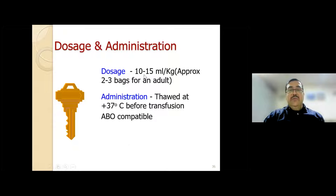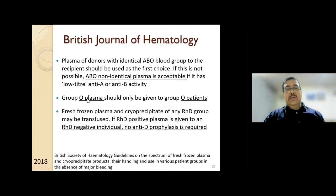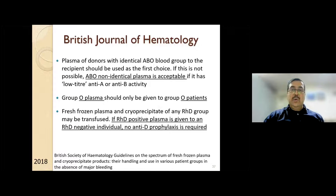The general FFP dose is 10–15 ml/kg. It must be thawed appropriately and preferably ABO compatible. British Journal of Hematology states that ABO non-identical plasma is also acceptable, except that O group plasma—which sometimes has high anti-A or anti-B titers—should only be given to O recipients. For non-O groups, other group plasma can be used. For RH-negative patients, RH-positive plasma can be given. Practically, plasma and cryoprecipitate need not be labeled for RH, and no anti-D prophylaxis is required or mandated.